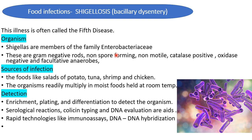Shigella produce acid but usually no gas from glucose, unlike Salmonella which ferments glucose with gas production. They are typical mesophiles and grow at an optimal temperature of 10 to 45°C, and are heat sensitive compared to other members of the family — even mild heat can destroy them. The genus has four species: Shigella dysenteriae, Shigella flexneri, Shigella boydii, and Shigella sonnei.